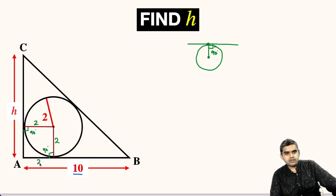This distance will also be 2 units and this distance will also be 2 units. Let us name these 2 points as point P and point Q.